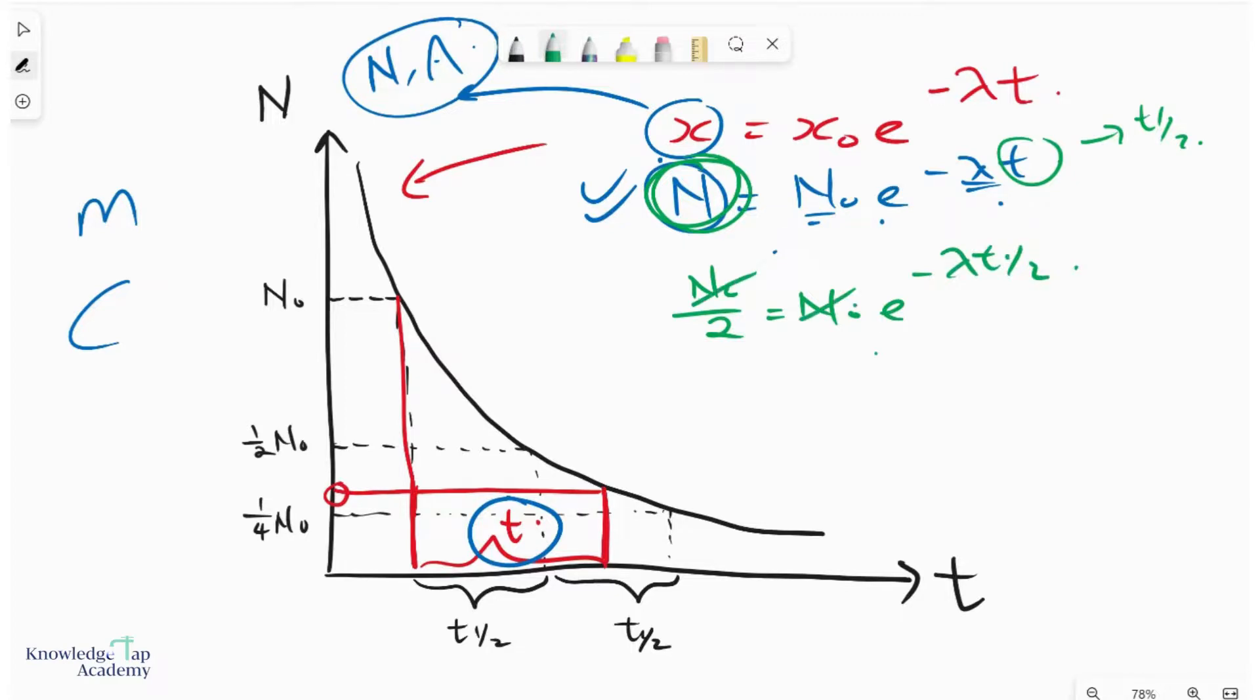And N₀ cancels. And so if we undo the e, we get ln on both sides. So we have ln(½) equals to minus lambda t half.